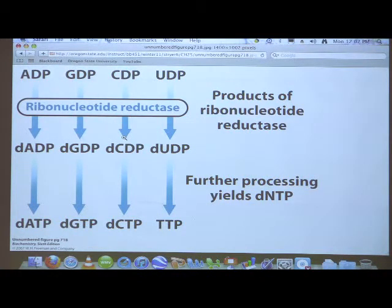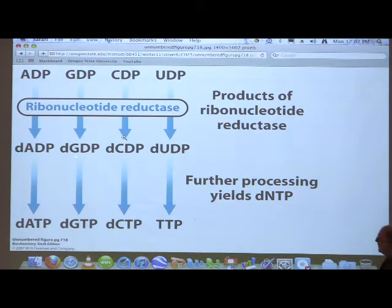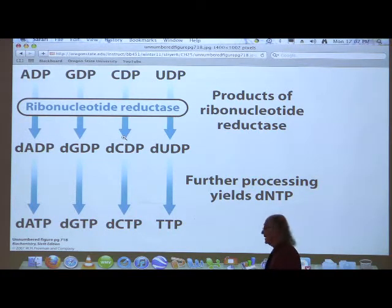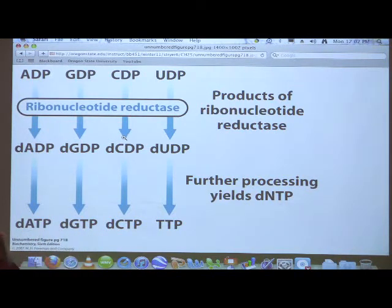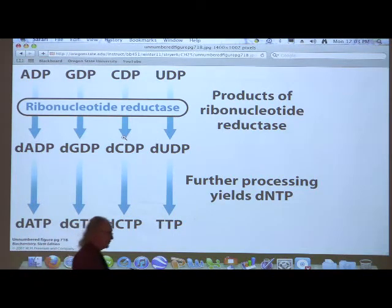Ribonucleotide reductase catalyzes the conversion of ADP to dADP, GDP to dGDP, CDP to dCDP, and UDP to dUDP. You'll notice that T is not up there — metabolism of thymidine nucleotides comes from dUDP, and we'll see how that occurs later. This one enzyme controls the synthesis of all four deoxyribonucleotides.